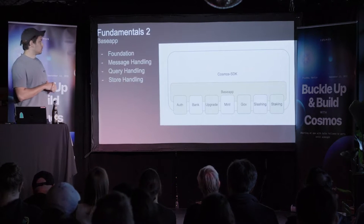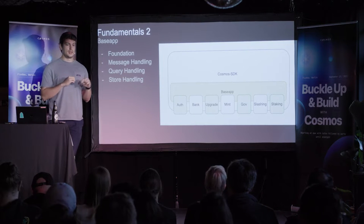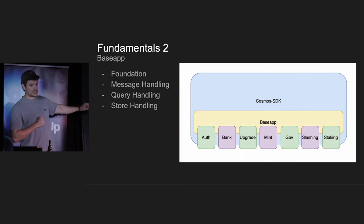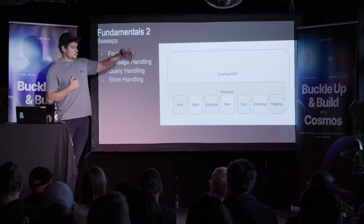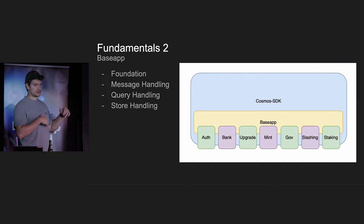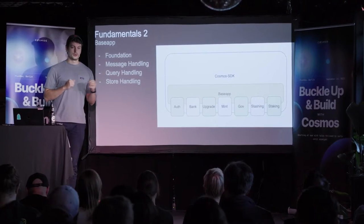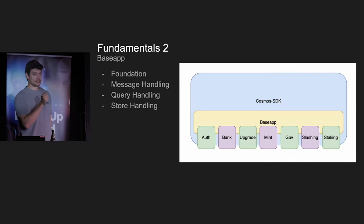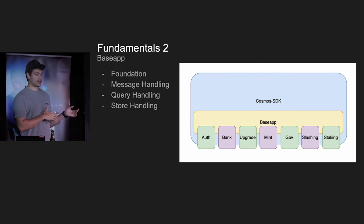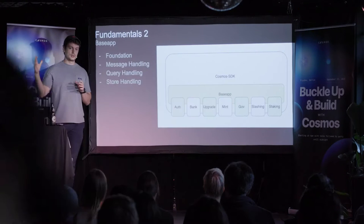Taking a step up to the Cosmos SDK and how it works: you have a base app, which is essentially the foundation. It interacts with all the modules. When you submit a transaction, message handling is routed from Tendermint to the base app, which then chooses where to send the transaction. Alongside message handling, there's query handling for historical and current state. Base app also handles storage — writing to the underlying IAVL Merkle tree — all abstracted for the end user.